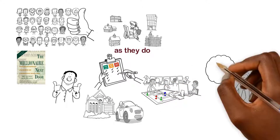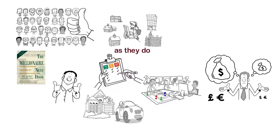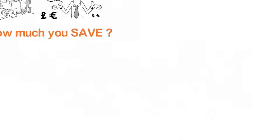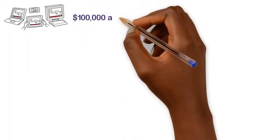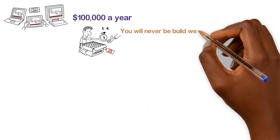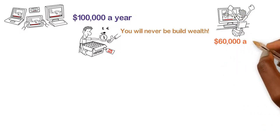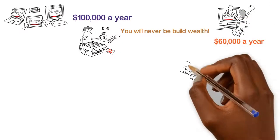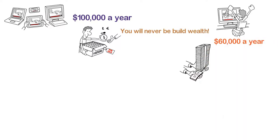At the end of the day, it doesn't matter how much you make. What matters most is how much you save. If you make $100,000 a year, but you spend $125,000 a year, you will never build wealth. But if you make $60,000 a year, and you live on $30,000, investing the rest, over time, you'll be in great shape.